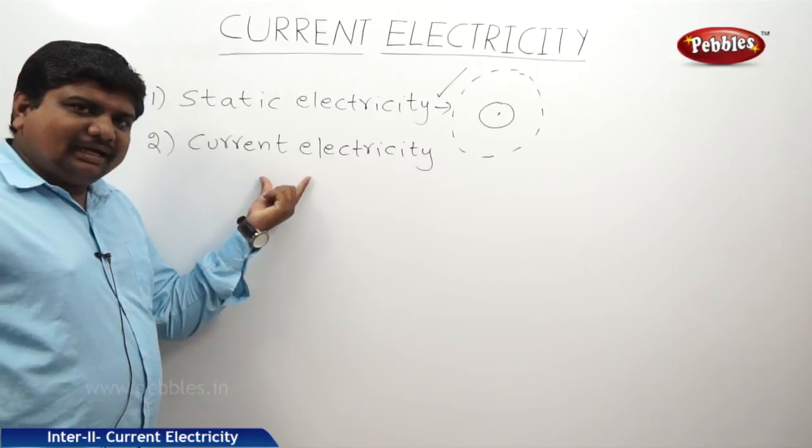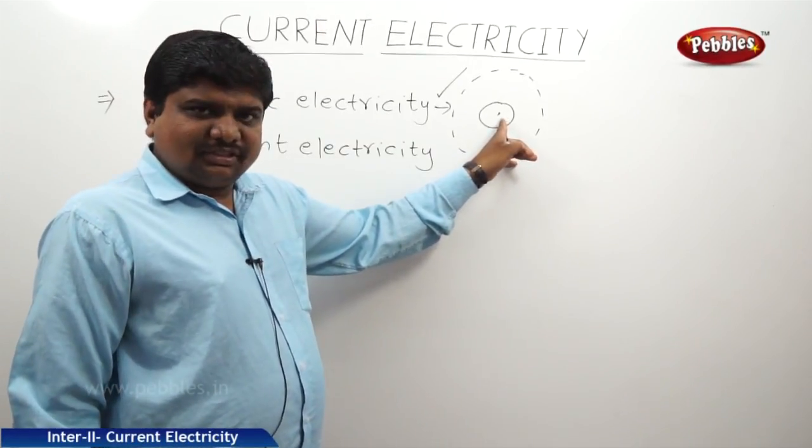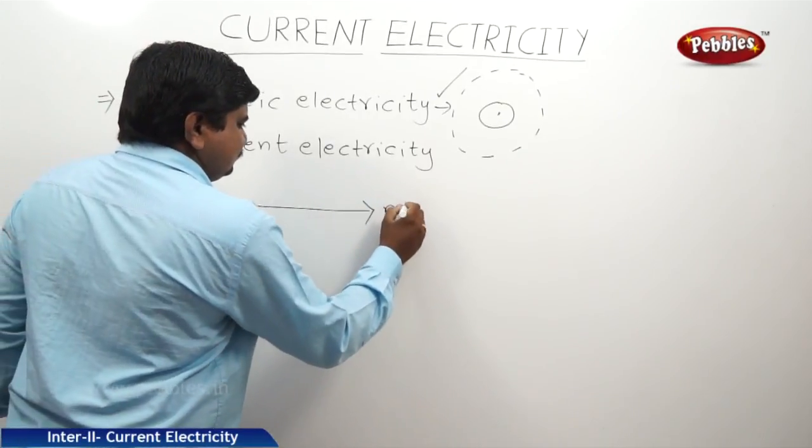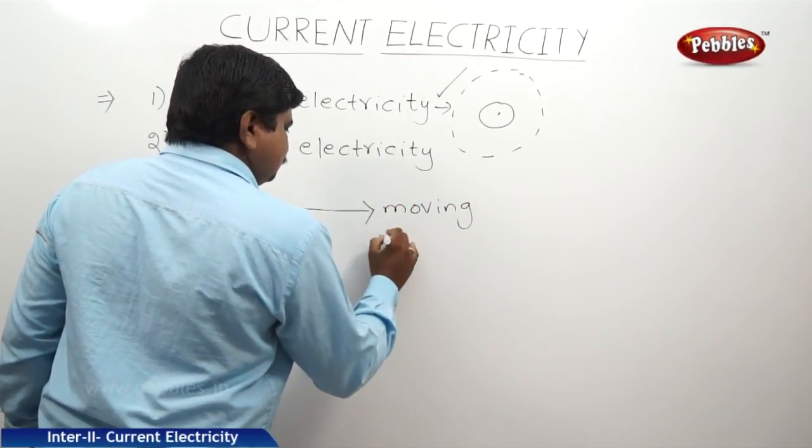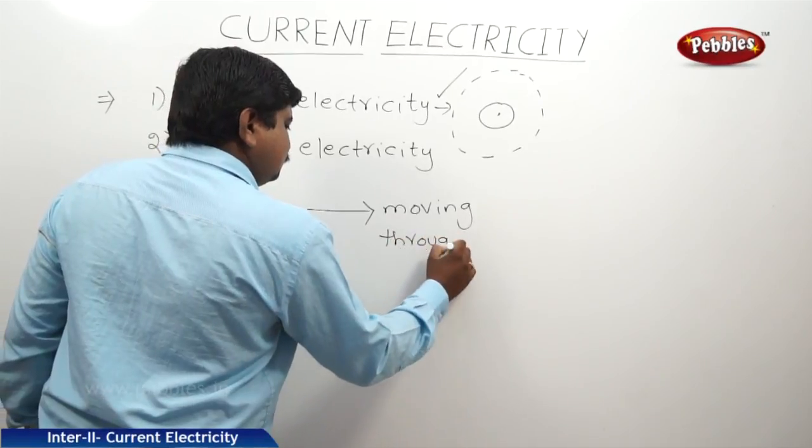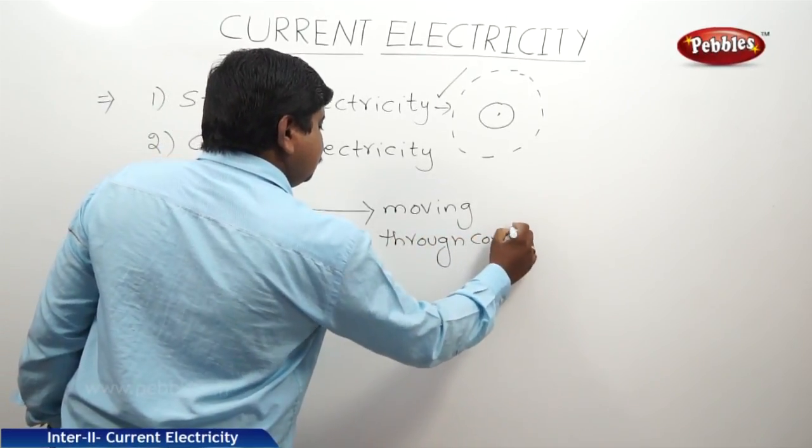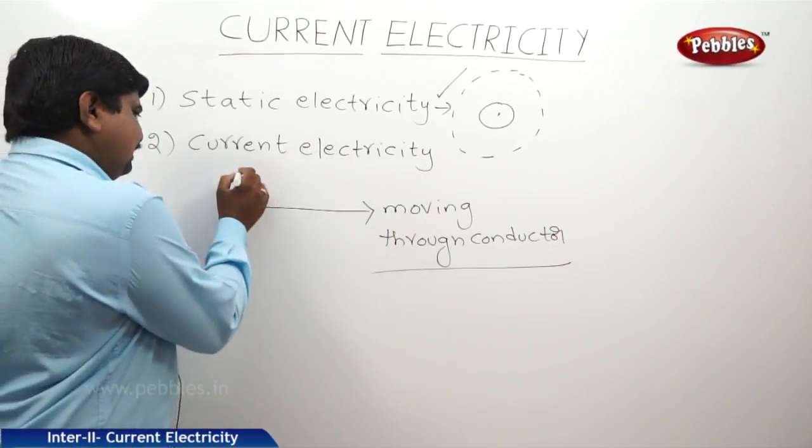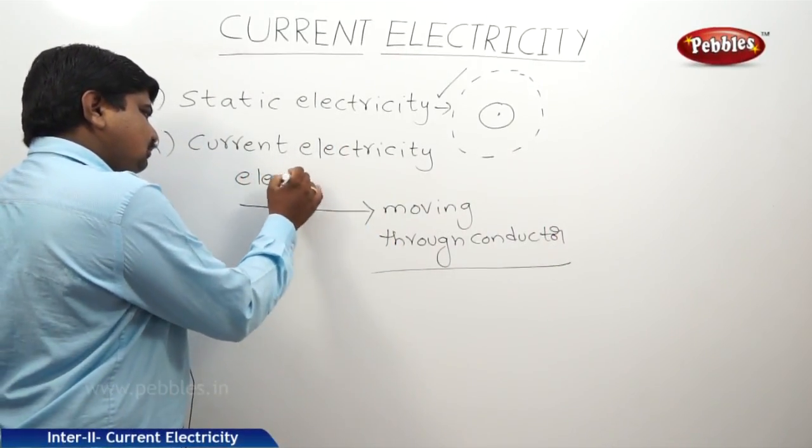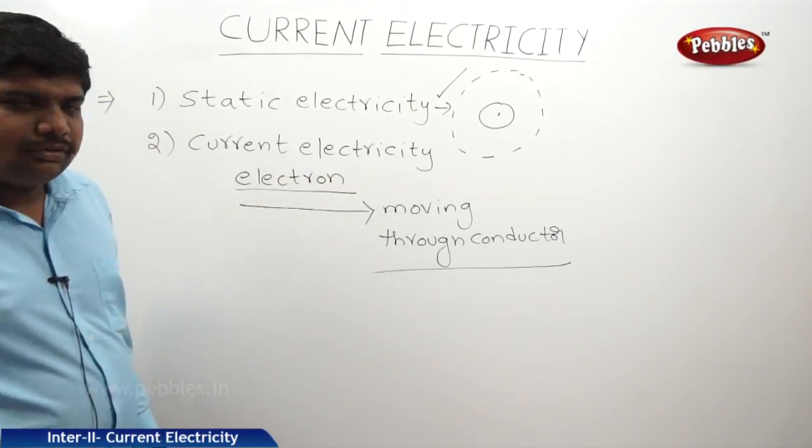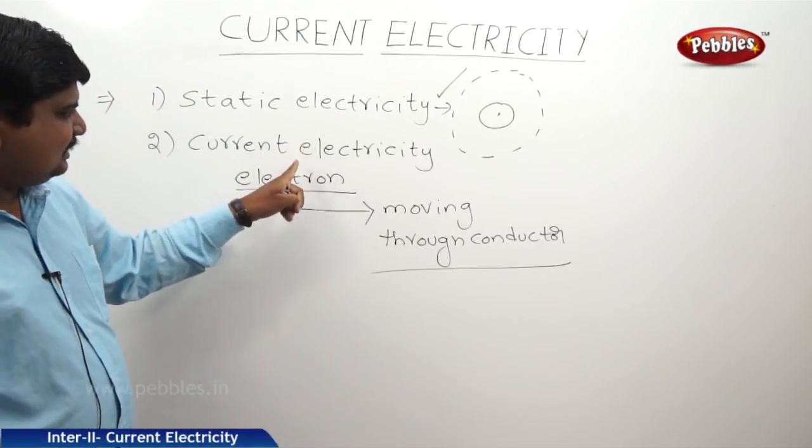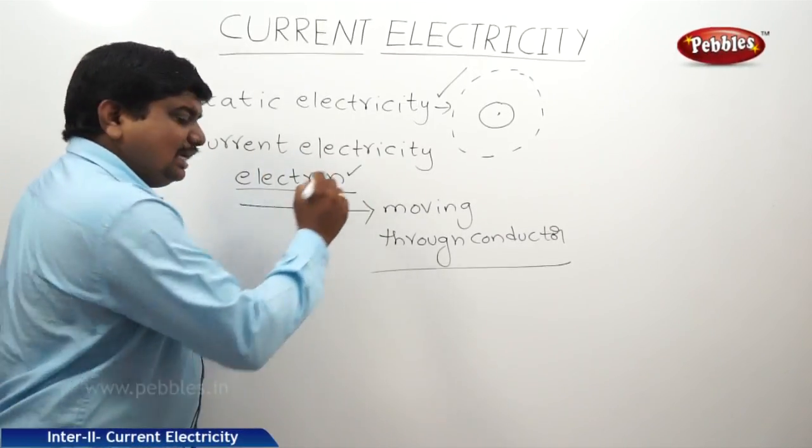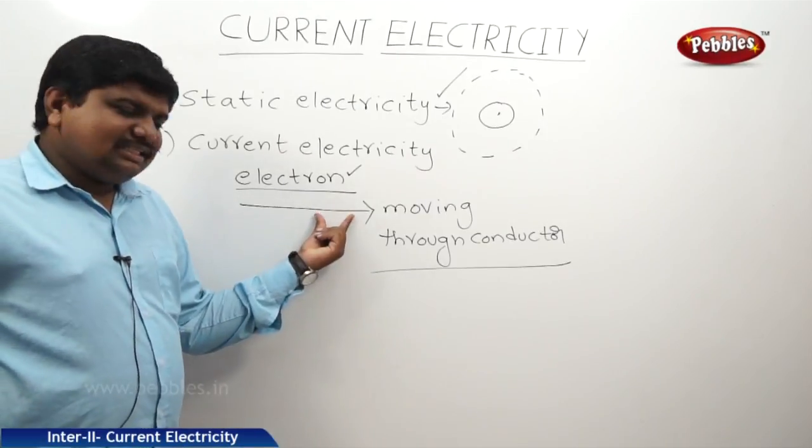But, in Current Electricity, charge is stable and flowing or moving through the conductor. It is charged into an electron. So, it is static electricity versus current electricity. In Current Electricity, we are choosing an electron which is inside the conductor.